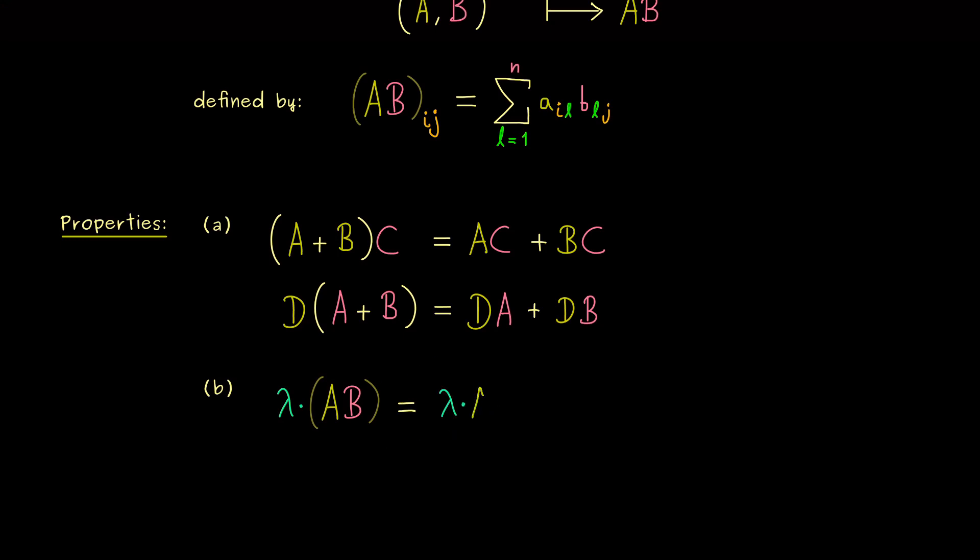it's the same as first calculating the scalar multiplication with a and then multiplying with b. In other words, we have lambda times a and then the matrix product with b.